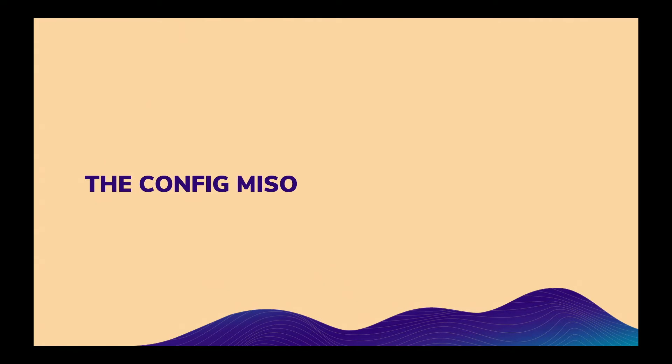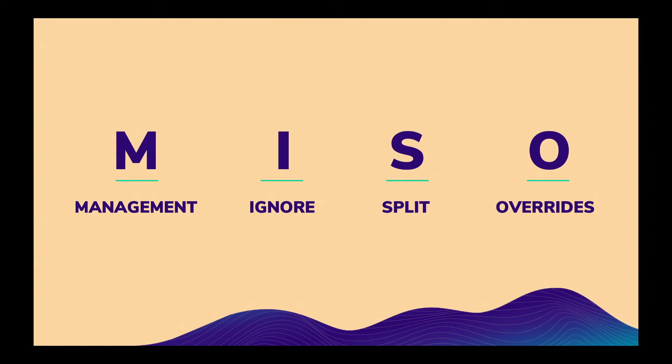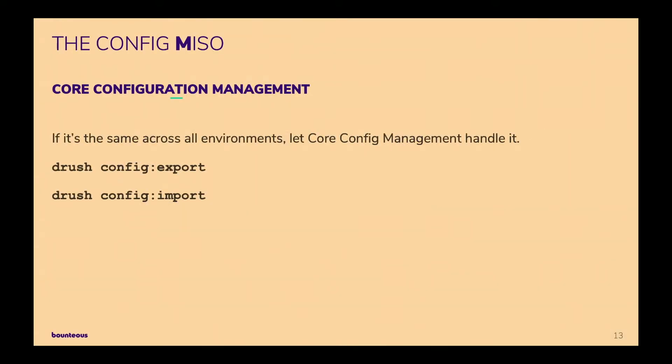Now we get to the cooking portion of the show — the config NISO. It's just an acronym that helps me keep in mind what we're dealing with: core Configuration Management, Configuration Ignore, Configuration Splits, and Configuration Overrides. The configuration management is just the core Drupal configuration management — your Drush config export and config import. If something is going to be the same on every environment, let core manage that, because it does that really well.